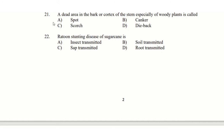21st question: Added area in the bark or cortex of the stem, especially of a woody plant, is called — option A: spot, option B: canker, option C: scorch, option D: dieback. The answer is option B: canker.